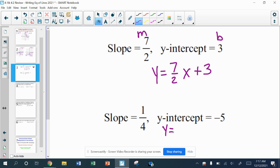So for the second one, y equals, the slope is 1 fourth. Put your x minus 5.